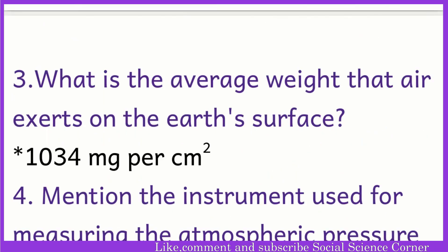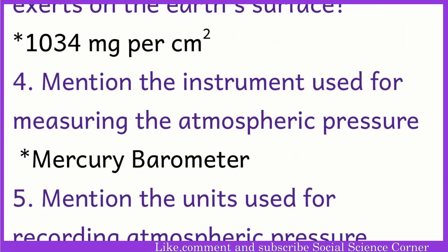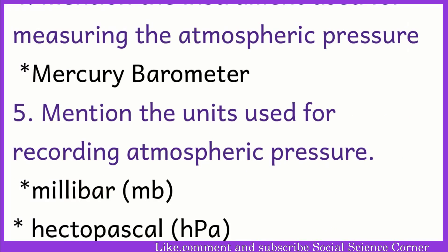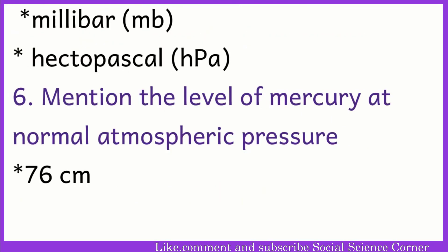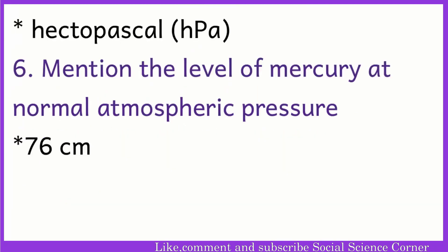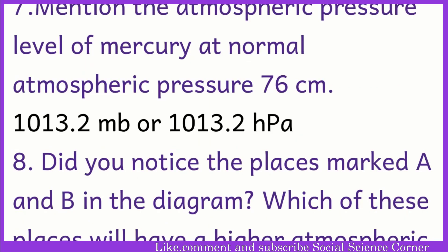What is the average weight that air exerts on the earth's surface? 1034 mg per cm². The instrument used for measuring atmospheric pressure is the mercury barometer. The units used for recording atmospheric pressure are millibar and hectopascal. The level of mercury at normal atmospheric pressure is 76 cm, which equals 1013.2 millibar or 1013.2 hectopascal.